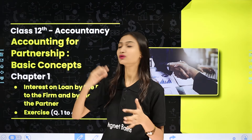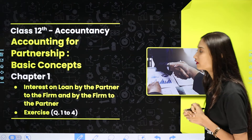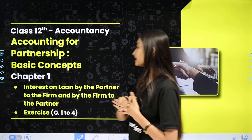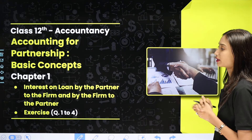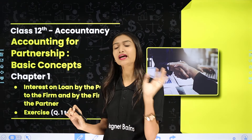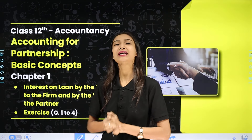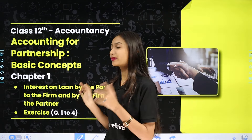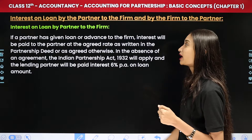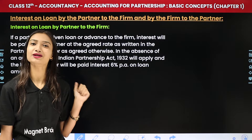Today's topic is: Interest on Loan by the Partner to the Firm, and also by the Firm to the Partner. We will first look at the concept and then solve some exercise questions, so you get clarity on what this topic is and how to do calculations. Let's start — but before that, quickly like, share, and subscribe to the channel.